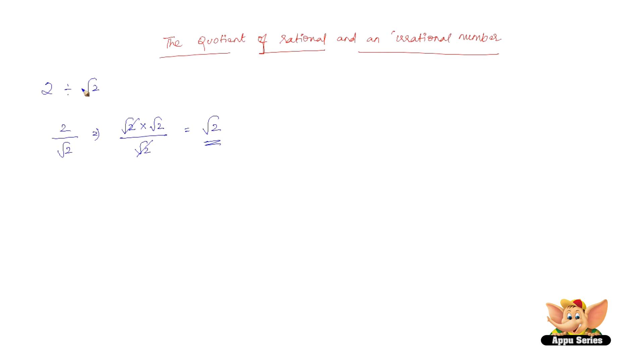Therefore, 2 divided by root 2 is root 2, which is irrational. So, one more thing that we can conclude from this is division of a rational number by an irrational number or vice versa is always irrational.